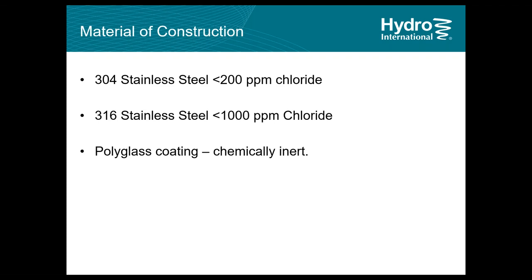When service water has chloride levels higher than 1,000 ppm — such as applications with high salinity — we can coat the 316 HydroBrake with PolyGlass coating, a polymer coating with glass flakes. If a lot of abrasive grit is present in the flow, we can apply an abrasion-resistant topcoat called ArmaGel — a co-polymer coating with glass flakes and silicon carbide, which is very hard and abrasion resistant. Both coatings are suitable for saturated chloride solutions and are chemically inert, preventing any chemical action on the steel.